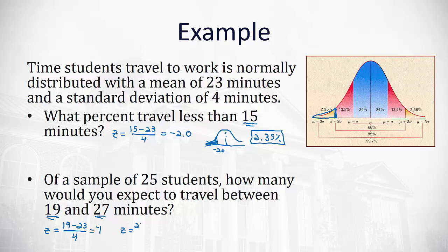For the 27, 27 minus 23 divided by 4 is also 1, but this time it's a positive 1. So this means in our curve, we're between negative 1 and positive 1 standard deviations from the mean. We want to be between that. That's these middle blue areas, and we know 68 percent of our data is between 1 and negative 1.